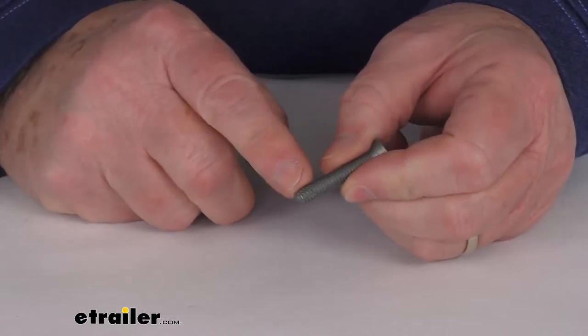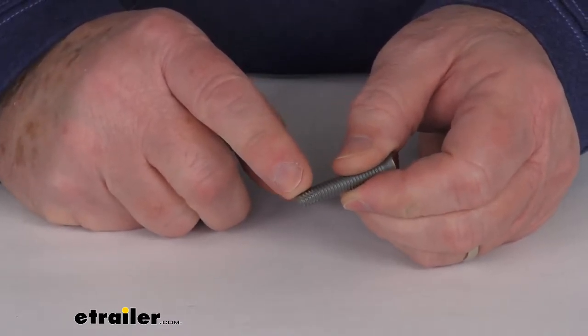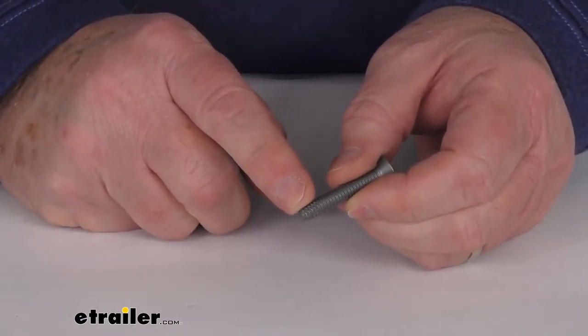The screw itself has a type F point to it, which is designed for securing your wood floor to heavy gauge sheet metal.